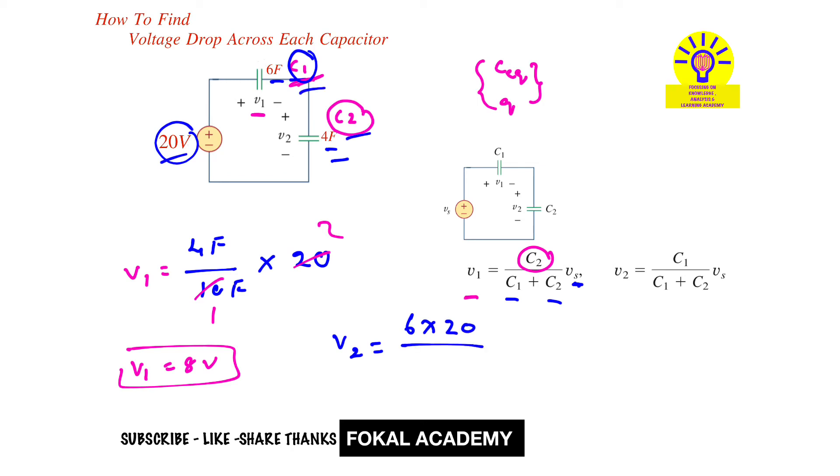So it becomes 6 times 20 divided by 10. 6 times 2 is 12, so V2 equals 12 volts. These are the voltage drops across each capacitor.